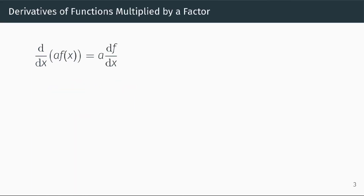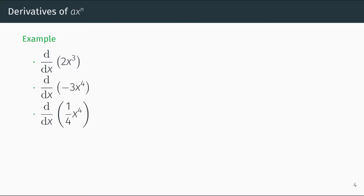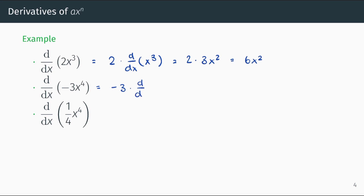A property of differentiation is that if we have a function f(x) and we multiply this function by a number a, then the derivative of a times f(x) with respect to x is a times the derivative of f(x). For example, the derivative of negative 3 times x to the power of 4 is negative 3 times the derivative of x to the power of 4.